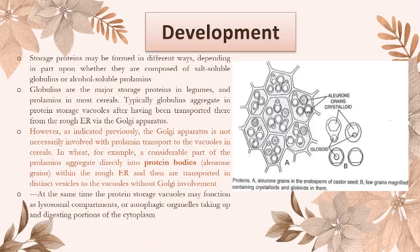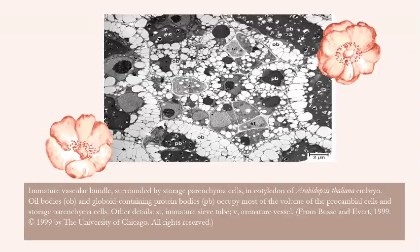Storage proteins may be formed in different ways, depending in part upon whether they are composed of salt-soluble globulins or alcohol-soluble prolamins. Globulins are the major storage proteins in legumes, and prolamins in most cereals. An image shows an immature vascular bundle surrounded by storage parenchyma cells in the cotyledon of an Arabidopsis thaliana embryo, where OB represents oil bodies and PB represents globoid-containing protein bodies.